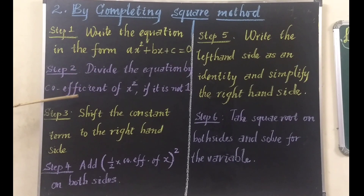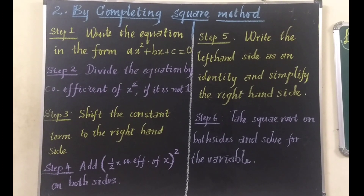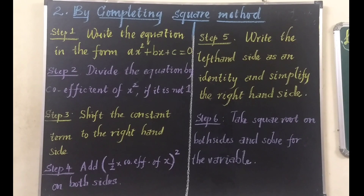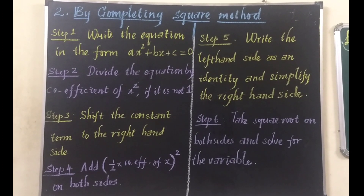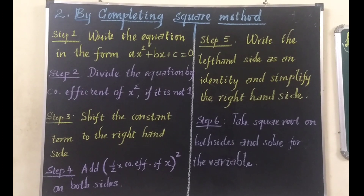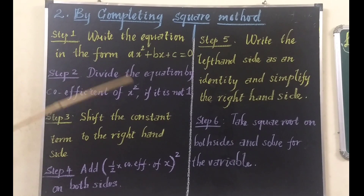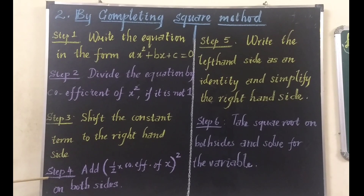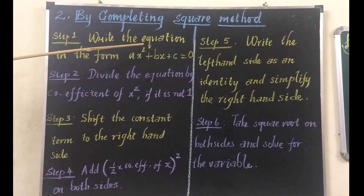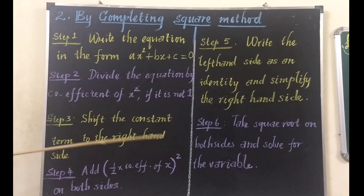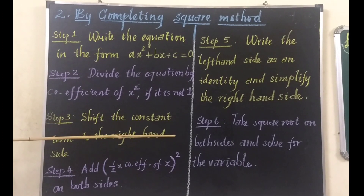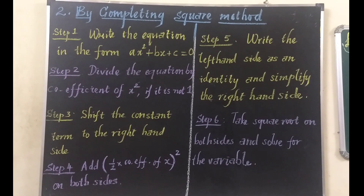Step 2: divide the equation by the coefficient of x squared if it is not 1. Look at the coefficient of x squared — that is the value of a. If a is greater than 1, divide the full equation by that number. Step 3: shift the constant term to the right hand side — the c value should be taken to the right hand side. Step 4, very important: add the square of half of the coefficient of x on both sides. The coefficient of x is b — multiply that by half, take the square of that, and add that value on both sides.